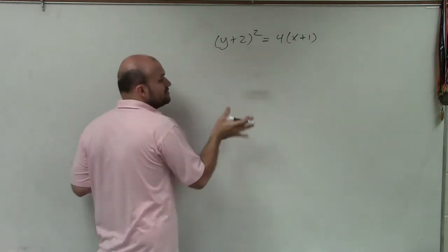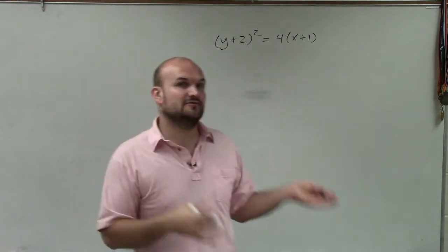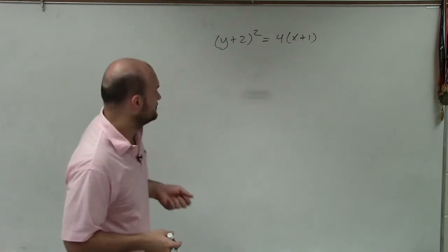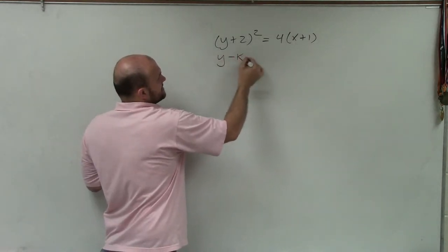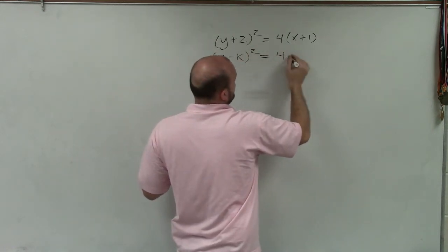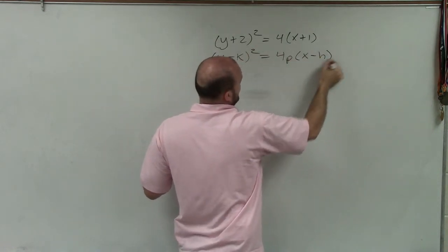I'm going to make sure I use the equation to help us identify the vertex and the focus, our value of p, with the equation that looks like y minus k squared equals 4p times x minus h.